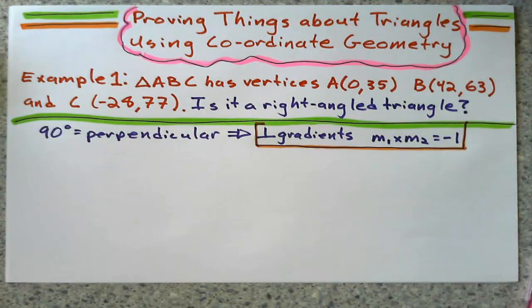So now what do I do? I'm going to figure out the gradients of each side of the triangle, and if any of the gradients multiply to get negative one, well then, it's a right-angled triangle.